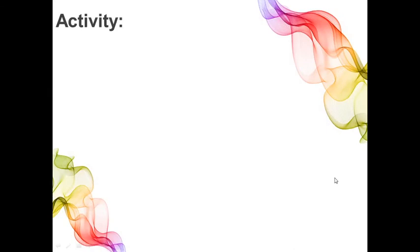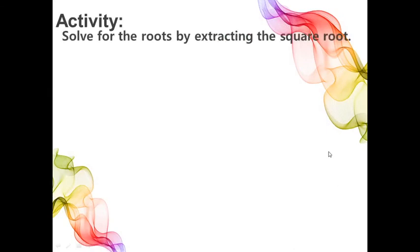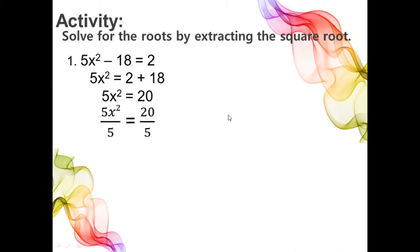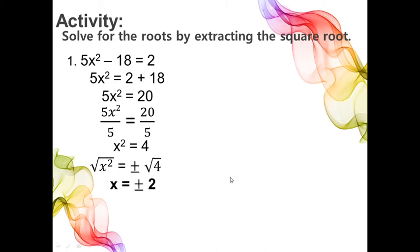Let us solve for the roots by extracting the square root. The first problem is 5x squared minus 18 equals 2. We transpose the constant term to the right side: 5x squared equals 2 plus 18, so 5x squared equals 20. Then we divide both sides by 5, giving x squared equals 4. Taking the square root of both sides, x equals plus and minus 2.